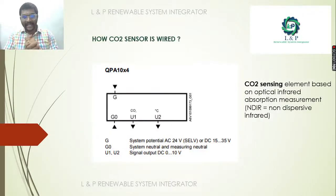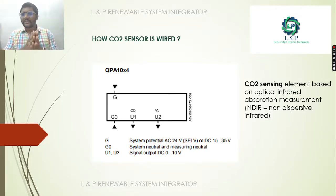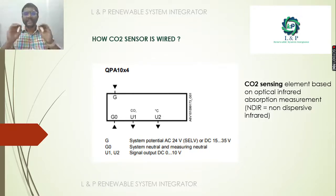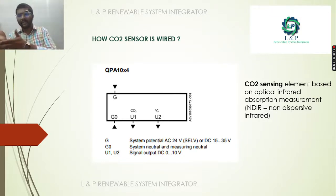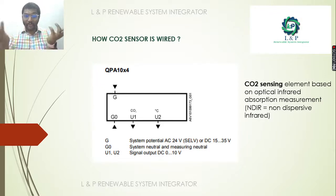This is a wiring diagram of a CO2 sensor — the Siemens QPA10X4 series. It works based on optical infrared absorption measurement. For this sensor, no calibration is needed. The sensor needs an operating voltage — it can be AC 24V or DC 15 to 35V. In the G and G0 terminals, we will connect the operating voltage. To take the feedback, we have two options: U1 and U2.